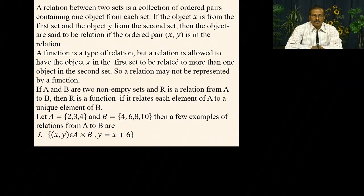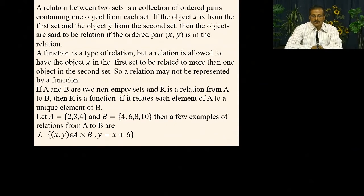When we talk about binary relation, A and B are two non-empty sets. The ordered pair form has the first element belonging to A and the second element belonging to B. So in ordered pair form, we construct our relation. A function is a type of relation, but a relation may not be a function. In function and relation, we have one object to one image.